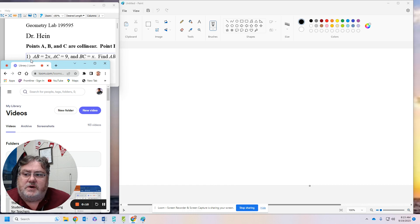So this is the question that I'm pointing at. Question 1 says, line segment AB equals 2X, line segment AC equals 9, and line segment BC equals X. And we're asked to find the length of line segment AB.